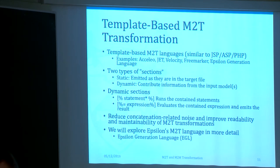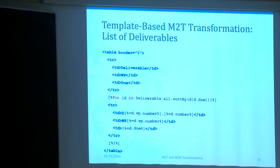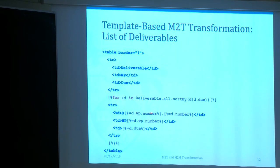In EGL, static and dynamic sections are encoded using delimiters: [% ... %] for dynamic statements and [%=...%] to emit a value. This makes transformations much easier to write and maintain. Here's how we write the same transformation in EGL: the blue text is static content emitted as-is, and within delimiters we have EOL statements — a for loop over deliverables sorted by due date — printing a new row with cells for work package number, deliverable number, and due date. This now follows the structure of the target artifact and looks much more like HTML.